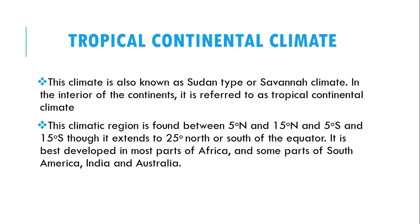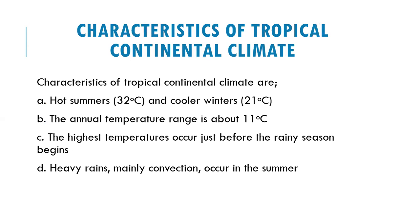This tropical continental climate is the next climate formed after the equatorial climate, extending through most parts of Africa and some parts of South America, India, and Australia. The characteristics are as follows: it is characterized by hot summers of 32 degrees and cooler winters of 21 degrees. The annual temperature range is about 11 degrees.